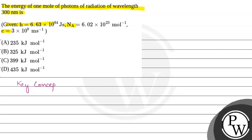The question is based on the energy of photons. Photons are packets of energy, and the energy of a photon is equal to H times nu, where H represents Planck's constant, nu is the frequency, and E represents energy.